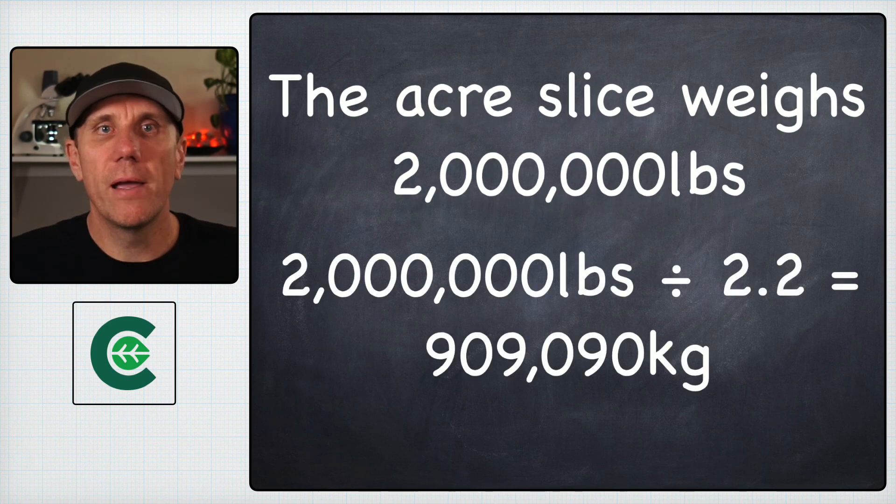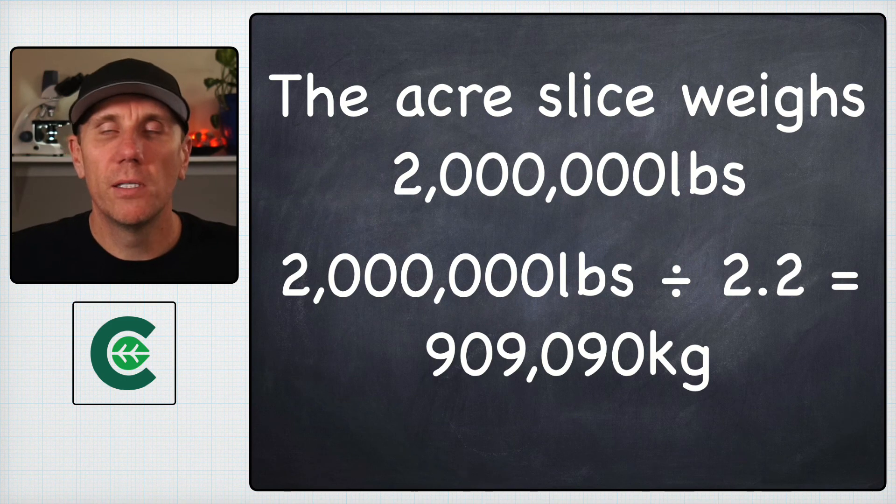First we need to get it into kilograms, so we simply divide two million pounds by 2.2 to get us 909,090 kilograms.